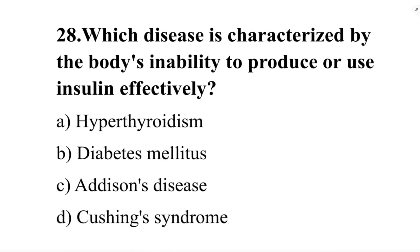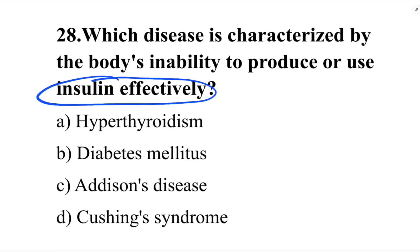Next question: which disease is characterized by the body's inability to produce or use insulin effectively? Option A: hyperthyroidism. Option B: diabetes mellitus. Option C: Addison's disease. Option D: Cushing's syndrome. The correct answer is option B, diabetes mellitus.